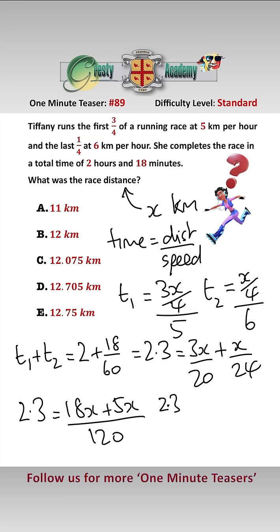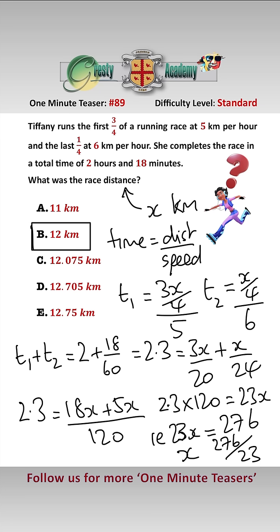Multiplying by 120, we get 2.3 times 120 equals 23x. So 23x equals 276, and x is 276 over 23, which is 12, which is answer B.